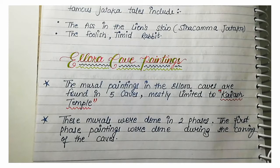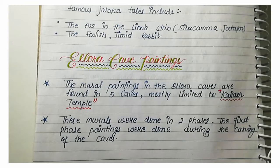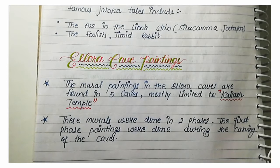Today's topic is Elora Cave Paintings. Mural paintings in the Elora caves are found in 5 caves, mostly limited to the Kailash temple. These murals were done in 2 phases — the first phase painting was done during the carving of the caves.